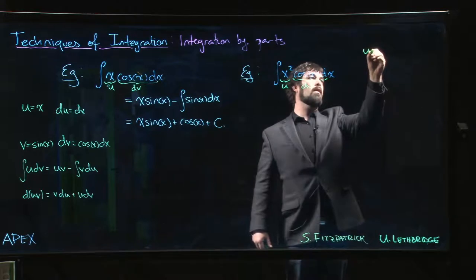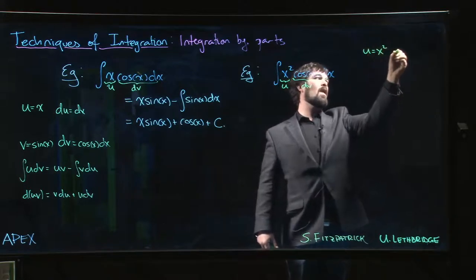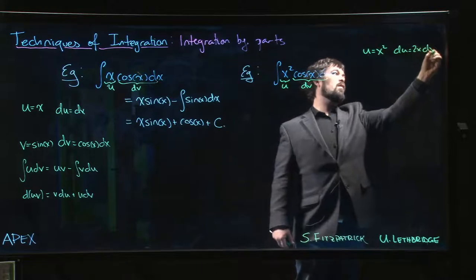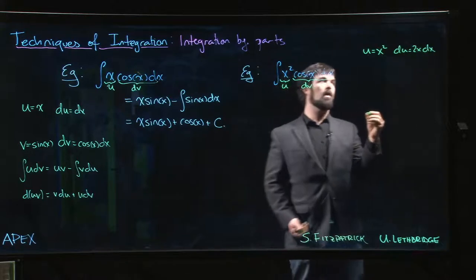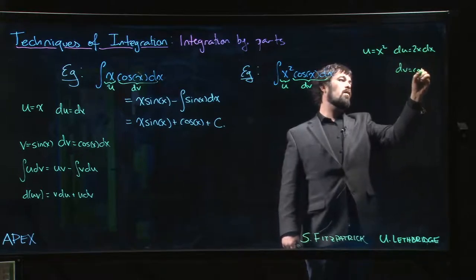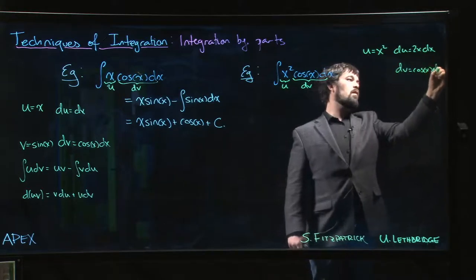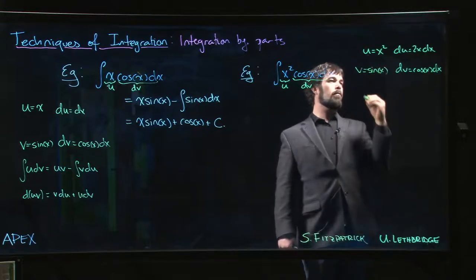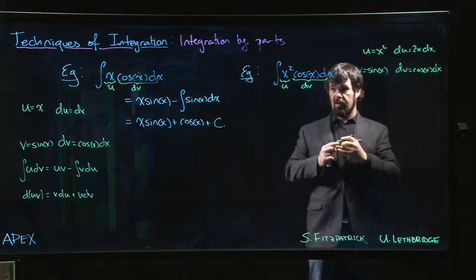That makes this our dv. So if u is equal to x squared, that means that du is 2x times dx. And if dv is cos x dx, then v must be sine x, same as it was over there.